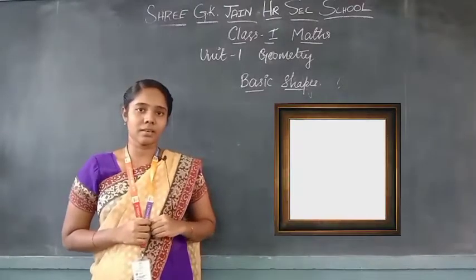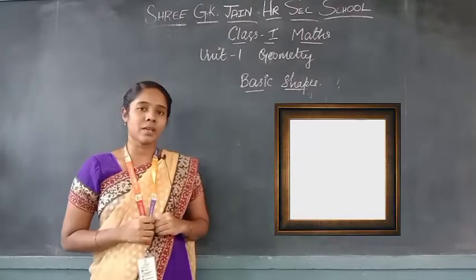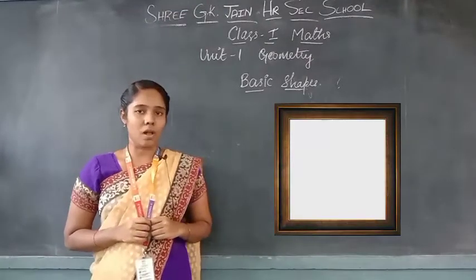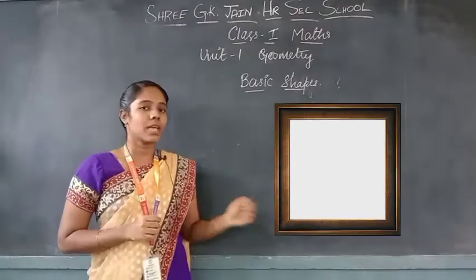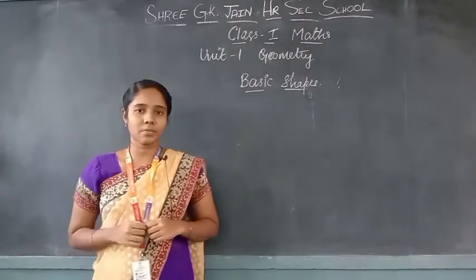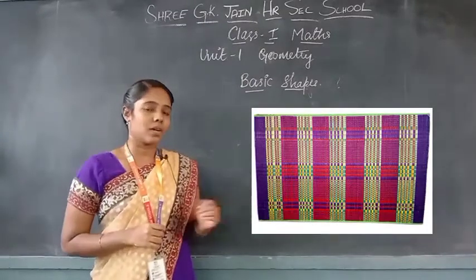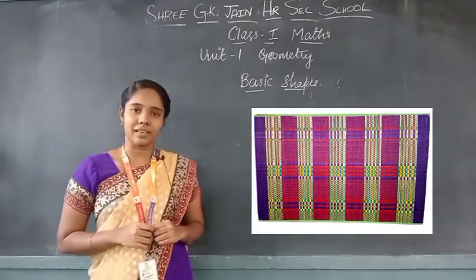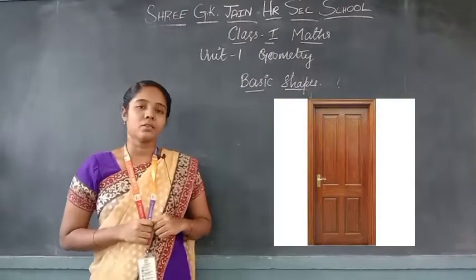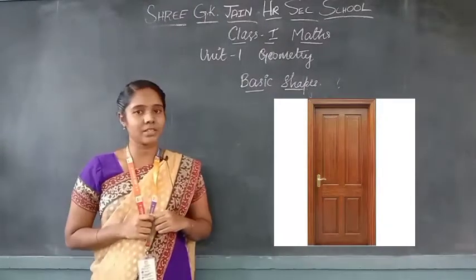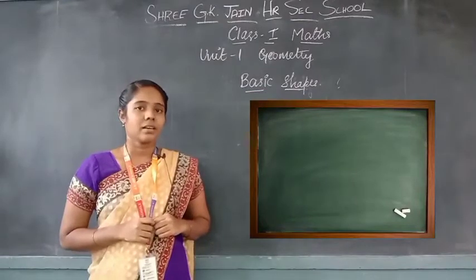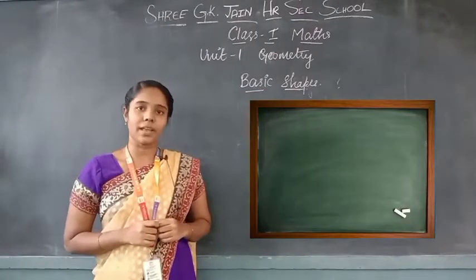Now, what is the thing I am showing here? You must have seen it on the walls of your home — it is a photo frame. Can you see what shape this photo frame has? It is also a square shape. Now, here is a mat — what is the shape of this mat? It is a rectangle. And a door — what is the shape of the door? It is also a rectangle in shape. Another example: a blackboard — the blackboard is also a rectangle in shape.